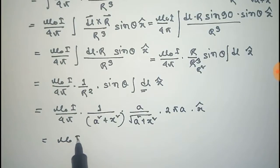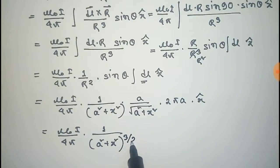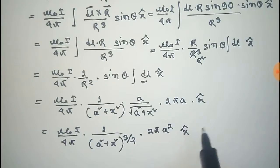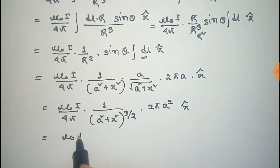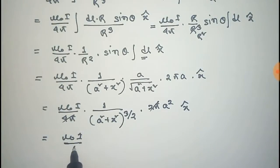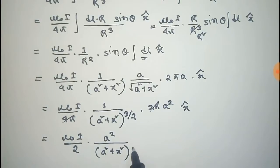That gives mu-naught i by four pi, into 1 by (a-squared plus x-squared) to the power 3 by 2, into 2 pi a-squared, x-cap. Simplifying — 2 pi cancels with the 4 pi giving a factor of 2 — so the magnetic field B equals mu-naught i a-squared by 2 times (a-squared plus x-squared) to the power 3 by 2, x-cap.